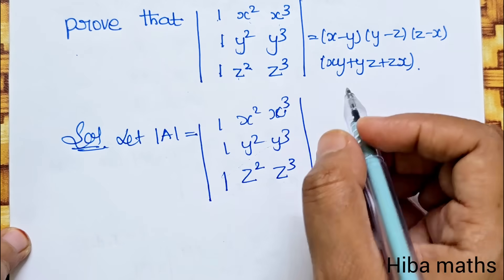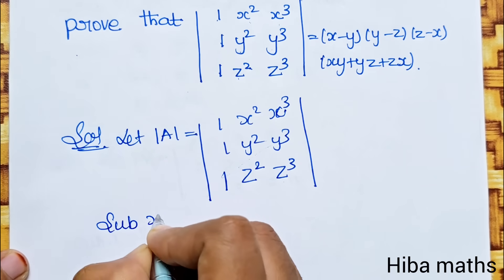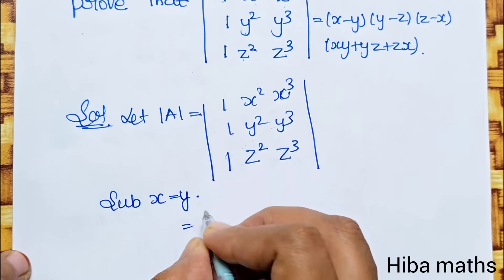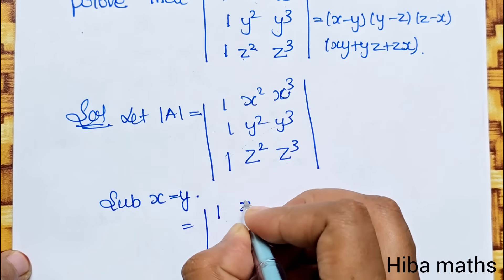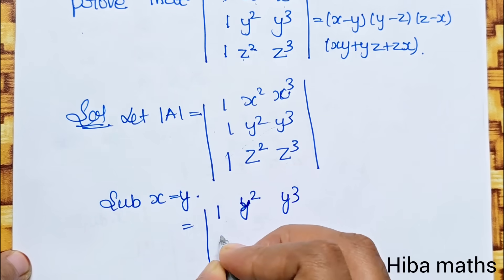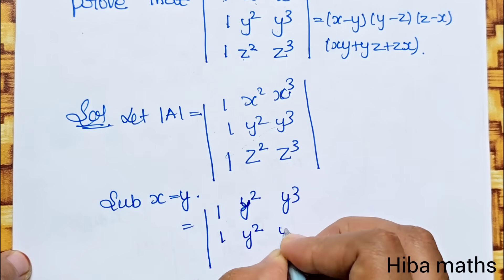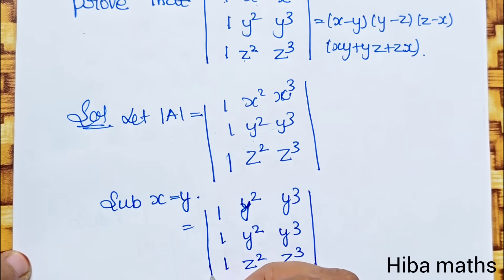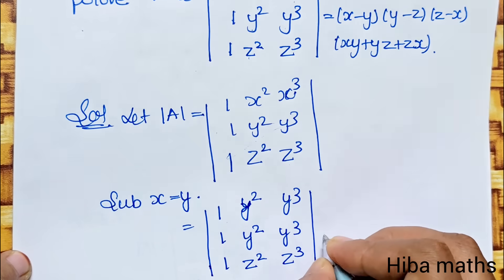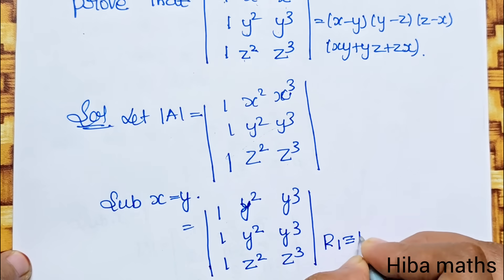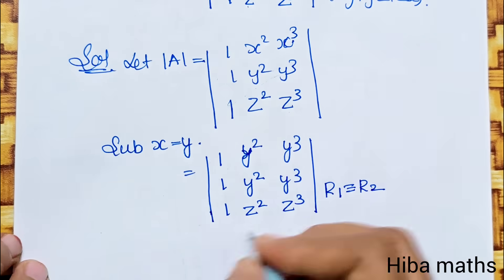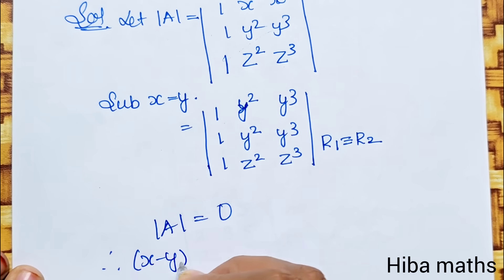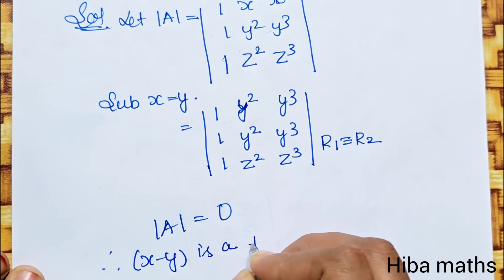In the solution, the first factor is (x-y). Substitute x equal to y. Then the first two rows become (1, y², y³) and (1, y², y³), which are identical, so R1 is identical to R2. Therefore the determinant value is 0, and (x-y) is a factor.